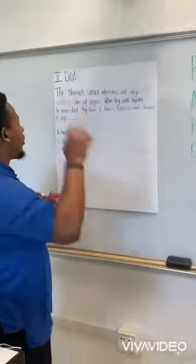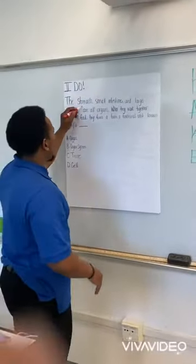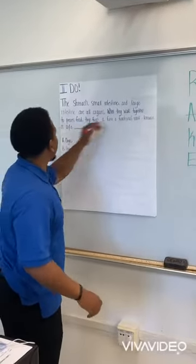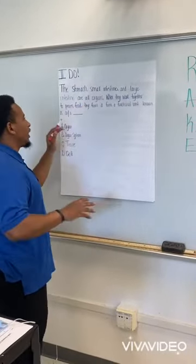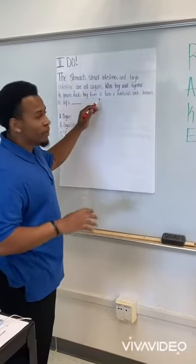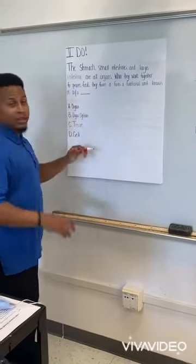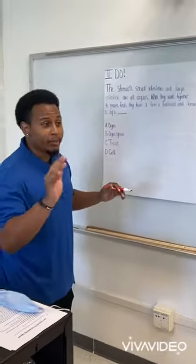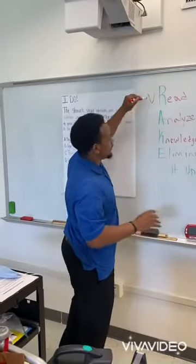So now we're at the R part, and the question reads: the stomach, the small intestine, and large intestine are all organs. When they work together to process food, they form a functional unit known as an... So we already have the red part.